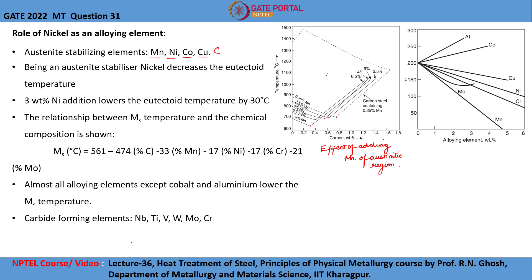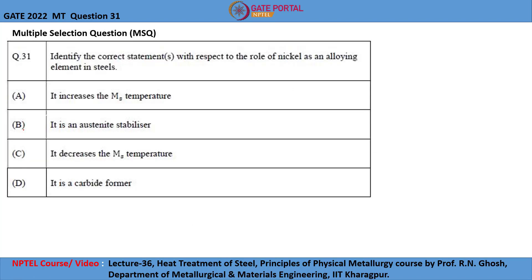Being an austenite stabilizer, nickel decreases the eutectoid temperature. Adding three weight percent of nickel reduces the eutectoid temperature by about 30 degrees Celsius. Therefore, nickel is an austenite stabilizer, and so option B is correct.